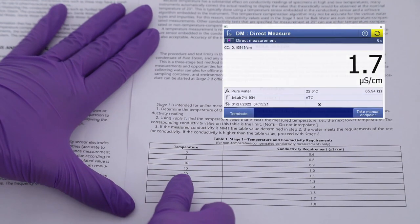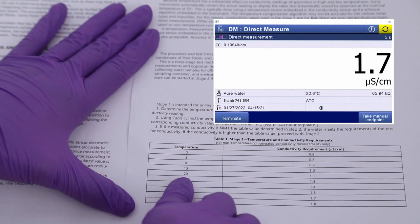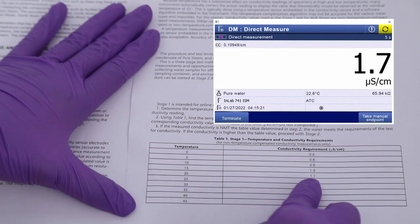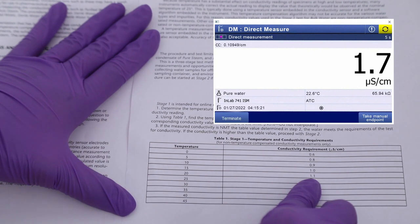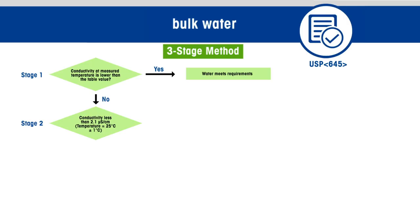In our case, the temperature is 22.6 degrees Celsius, so the next lower temperature will be 20 degrees Celsius, and the conductivity limit is 1.1 microsiemens per centimeter. Since the measured value is out of limit, we need to proceed with stage two.